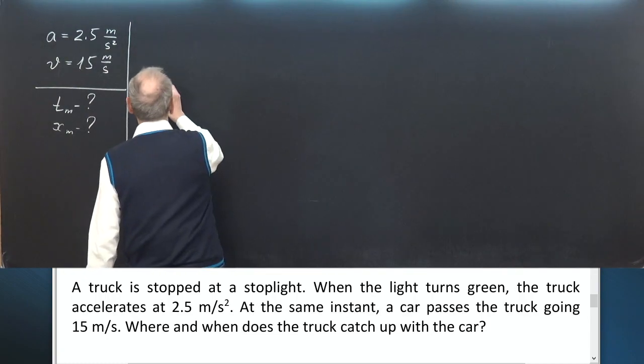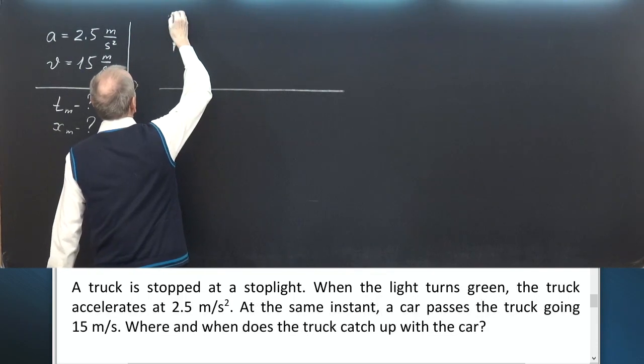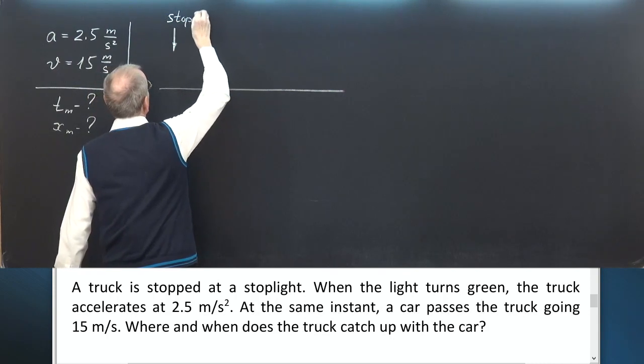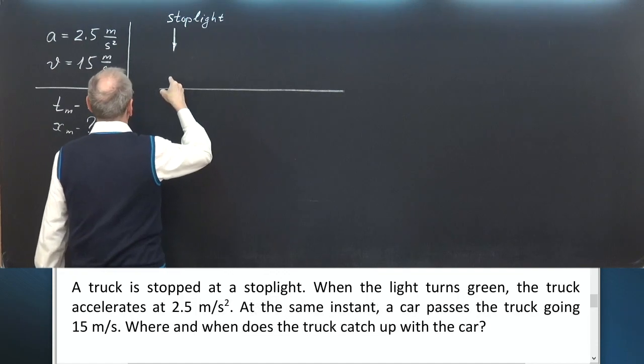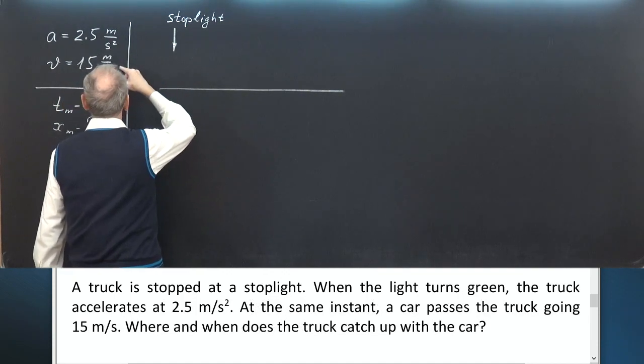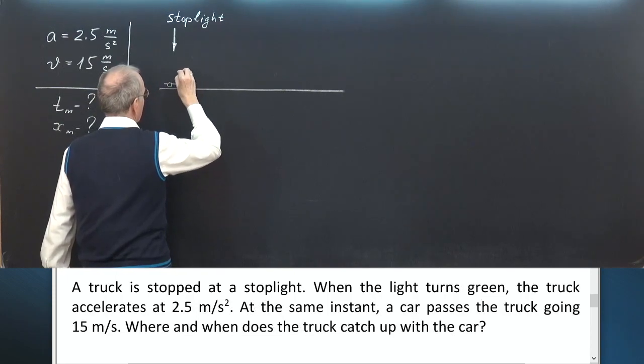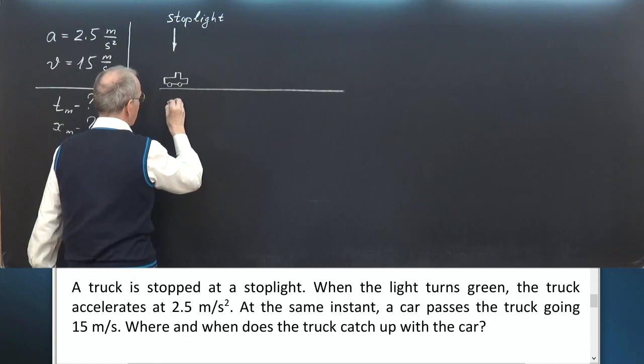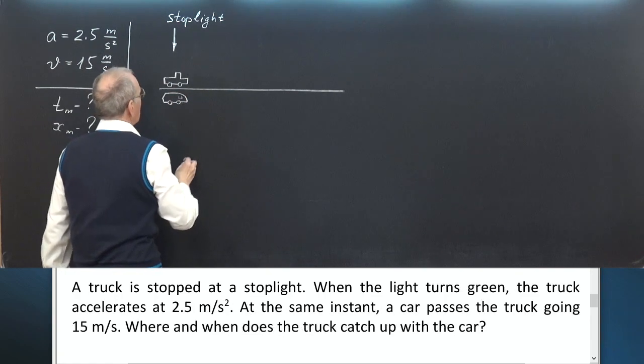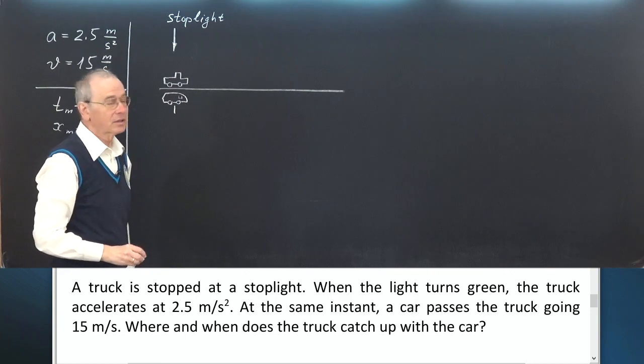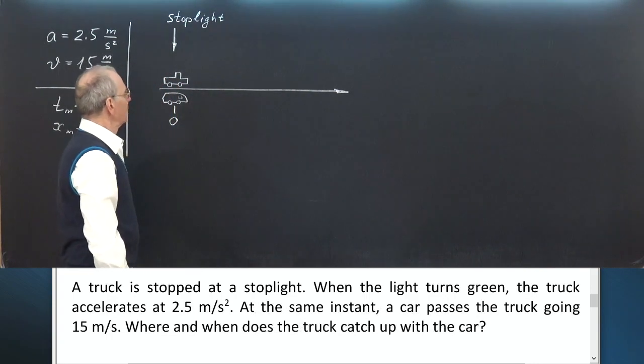So let's make a picture. The road. Stoplight is here. Both car and truck are here. Truck and car. This point has a coordinate zero, and the x-axis is directed along the road.